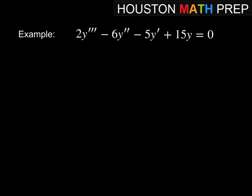Our first example, 2y triple prime minus 6y double prime minus 5y prime plus 15y equals 0 will give us auxiliary equation 2m cube minus 6m square minus 5m plus 15 equals 0. So if you haven't seen any of our videos about the auxiliary equation or this is new to you, you may want to figure out why we're doing this before you jump into this. But so that's basically where we'd end up,